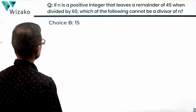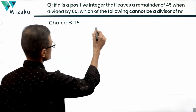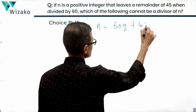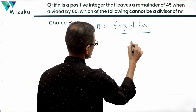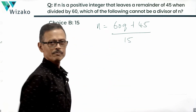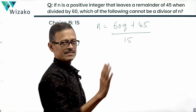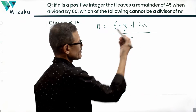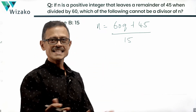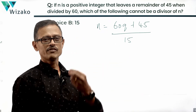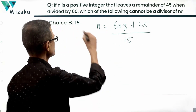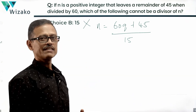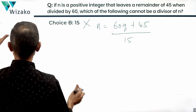Let's look at answer option B: the divisor is 15. We have n = 60q + 45. Is this divisible by 15? 15 divides 60, so 60q will definitely be divisible by 15. 45 is also divisible by 15, so any 60q + 45 will certainly be divisible by 15. So this is not the answer — we are looking for what cannot divide n, and 15 will certainly divide all such numbers.